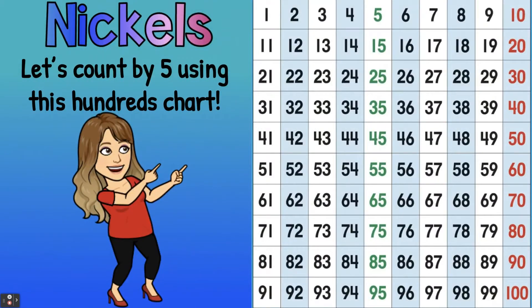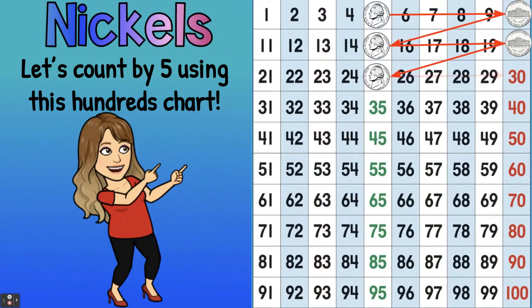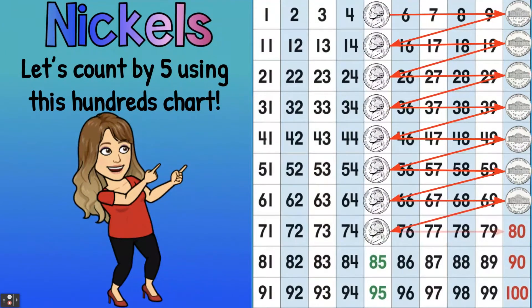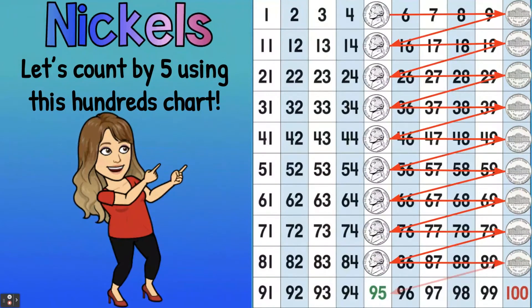Let's count by fives using this hundreds chart. Count out loud with me: 5, 10, 15, 20, 25, 30, 35, 40, 45, 50, 55, 60, 65, 70, 75, 80, 85, 90, 95, 100.